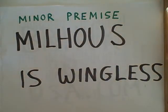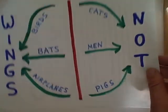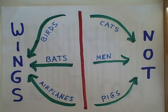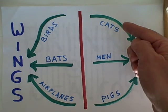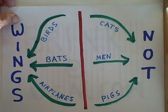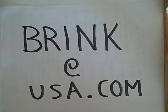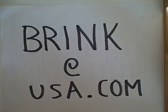Let's try another minor premise not leading to a valid conclusion: Millhouse is wingless. All we know is that Millhouse winds up on the side without wings. We don't know if Millhouse is a cat, a man, a pig, or something else without wings. So, these are logic paths. If you have any comments about this new technique for using deductive reasoning, contact me at Brink at USA.com. See you in the next topic.